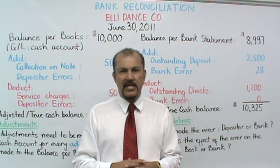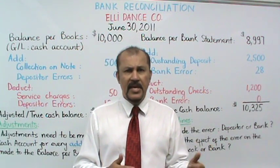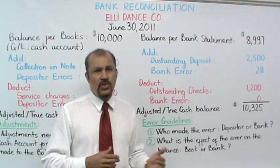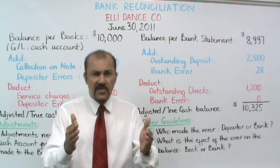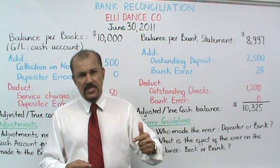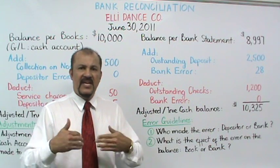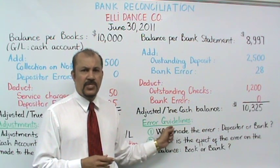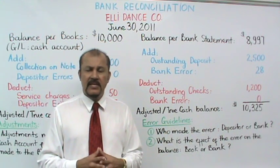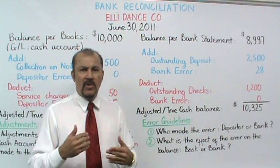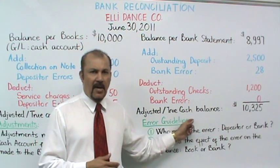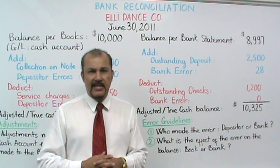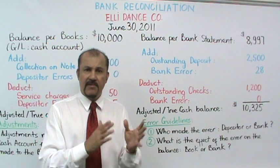Now that we've gone through the mechanics of the bank reconciliation, let me talk about errors and adjustments. When you see an error situation, two guidelines will help you. The first guideline is: who made the error — either the bank or the depositor. The second guideline is: what was the effect of this error on the balance? The balance you refer to in guideline two is based on your answer in guideline one. If the bank made the error, you look at the effect on the bank balance. If the depositor made the error, you look at the effect on the depositor's book balance. Keep those two things in mind when handling error situations on the bank reconciliation.